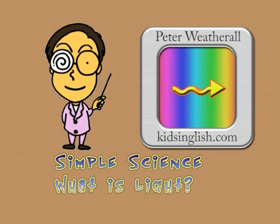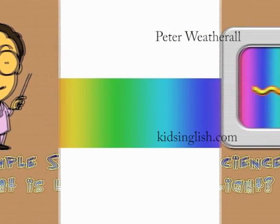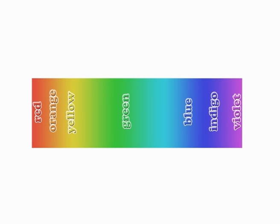Simple Science. What is light? Visible light comes in a range of different colours: red, orange, yellow, green, blue, indigo and violet.